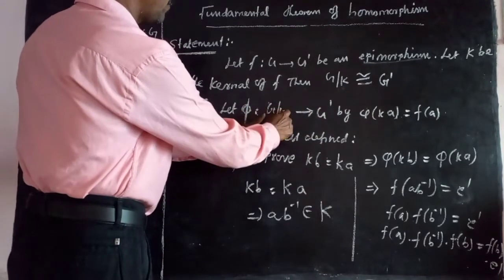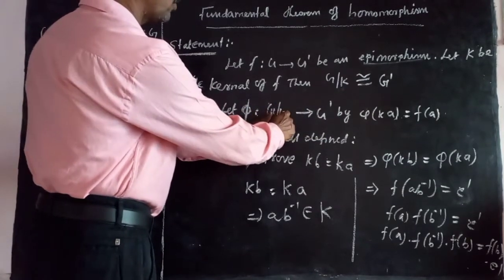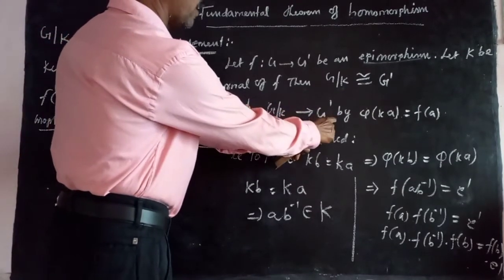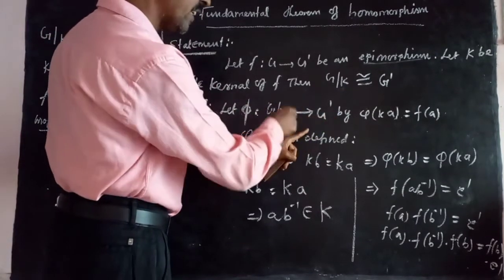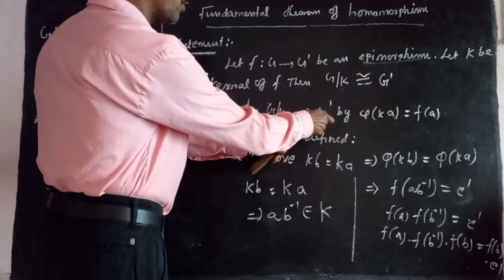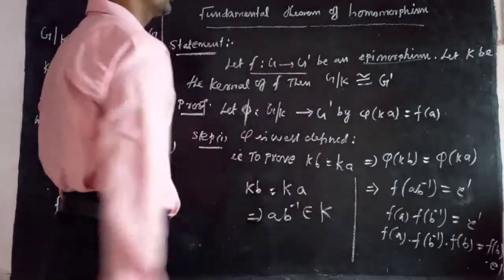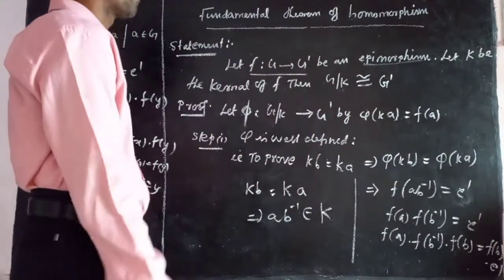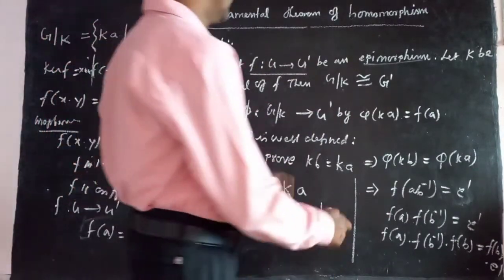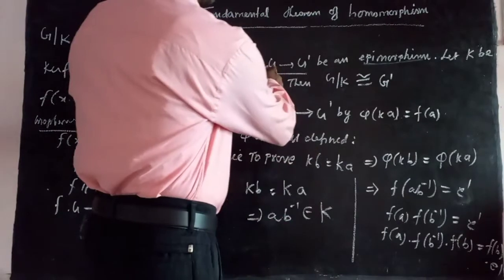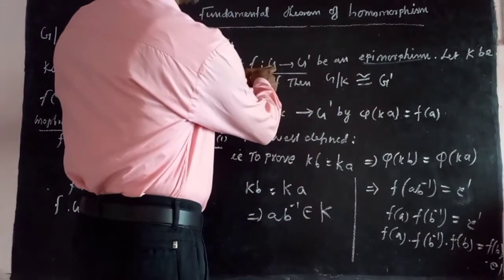So φ maps G/K elements to all elements of G'. That is, G goes to G' — all elements are covered under this mapping.